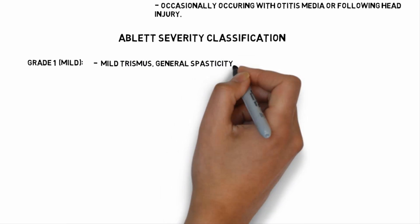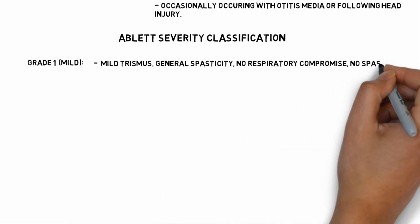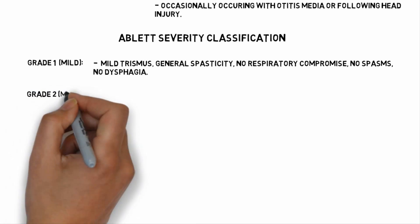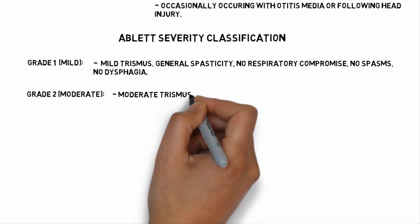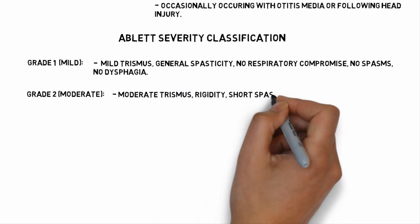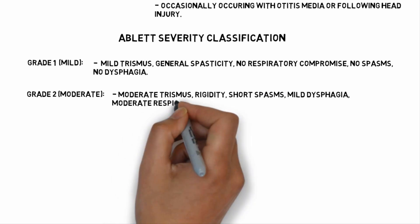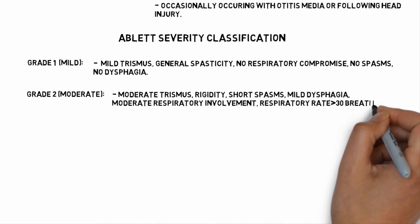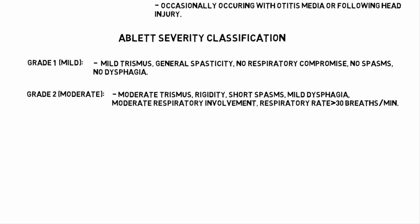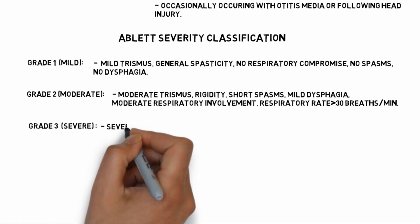Coming to the ablate severity classification: Grade 1, which is mild, presents with mild trismus, general spasticity, no respiratory compromise, no spasms, and no dysphagia. Grade 2, which is moderate, presents with moderate trismus, rigidity, short spasms, mild dysphagia, and moderate respiratory involvement.